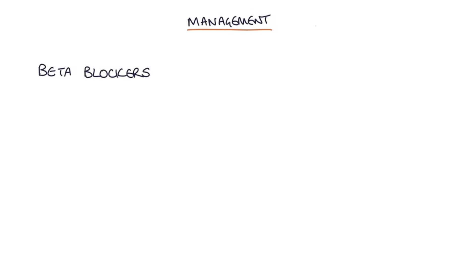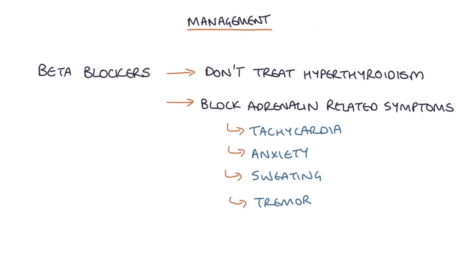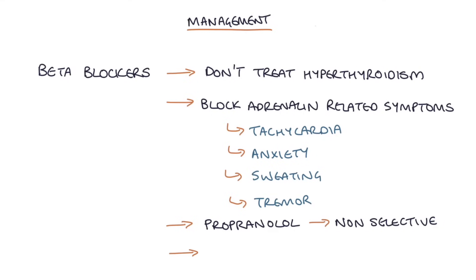Beta blockers don't treat the hyperthyroidism itself, but are used to block the adrenaline-related symptoms such as tachycardia, anxiety, sweating, and tremor. Propranolol is a good choice because it non-selectively blocks adrenaline activity, as opposed to more selective beta blockers that work only on the heart. Beta blockers are particularly useful in patients with thyroid storm.